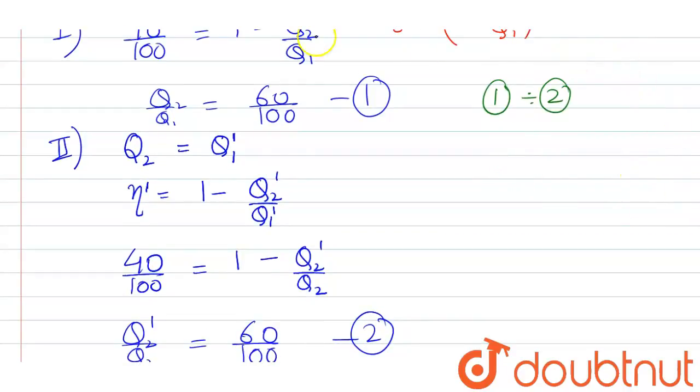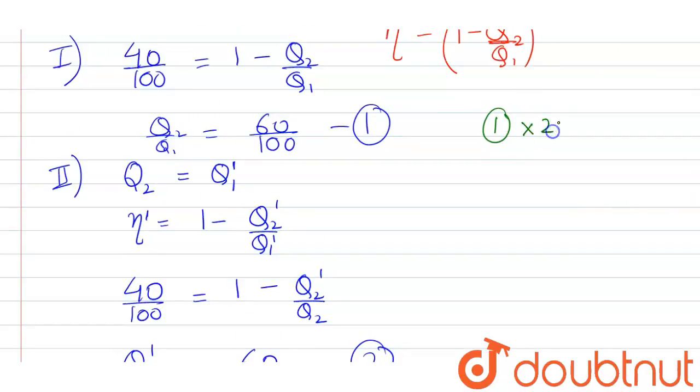Or we simply multiply both the equations. Multiply both the equations 1 and 2. We get Q₂/Q₁ multiplied by Q₂'/Q₂ equals 3600/10000.